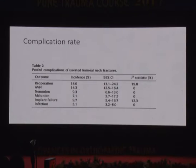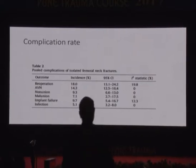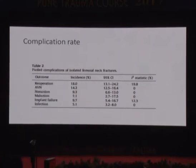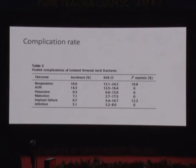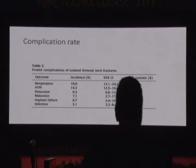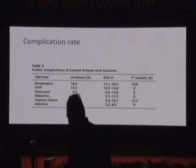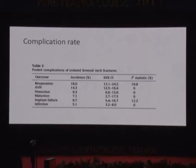Looking at overall outcomes, there's approximately a 20% re-operation rate following internal fixation for young femoral neck fractures: 14% incidence of AVN, about a 10% incidence of non-union, and about a 7% incidence of malunion. Different studies will have different rates, but the overall rate across all included studies is approximately a 20% re-operation rate. For every ten patients operated on, two will need another operation within a year or two — for AVN, non-union, or a combination of both.